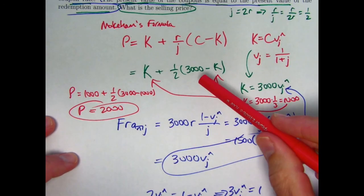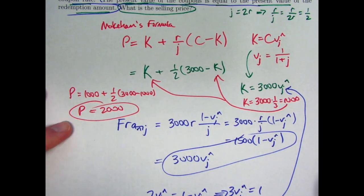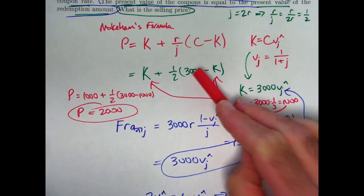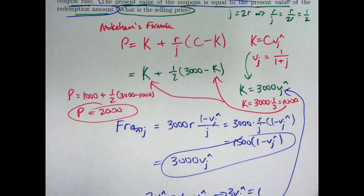Do note that that is smaller than the redemption amount, which is 3,000 here, which shouldn't be surprising since R over J is less than 1. It's 1 half. R is less than J. In that situation, the price will be smaller than the redemption amount.